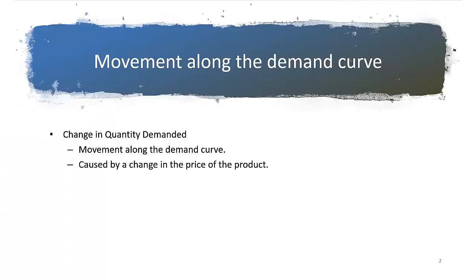In economics, we differentiate between the movement along the demand curve and the shift of the demand curve. Movement is also known as change in quantity demanded — it is called movement along the demand curve and it is caused by the price of the product. If the price of the product changes, the resulting change on the demand curve is called movement along the demand curve. It becomes clearer when we do an example.